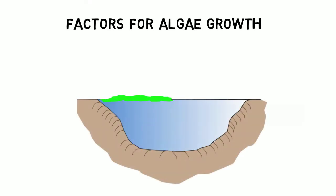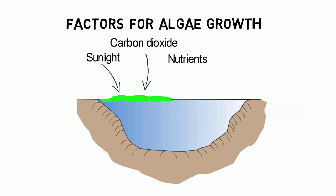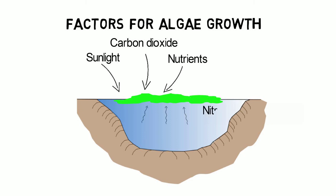Most algae blooms require three factors to bloom – sunlight, carbon dioxide, and nutrients. As with other plants, algae use sunlight and carbon dioxide for photosynthetic processes to produce energy and to initiate further growth under consumption of nutrients. Most common nutrients are nitrogen or phosphorus that enter the pond through fish excrements, dying plants, or human impact such as fertilization.